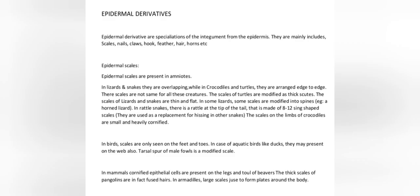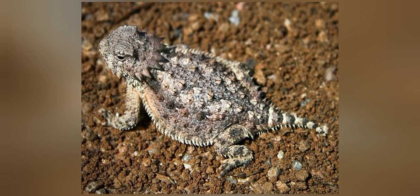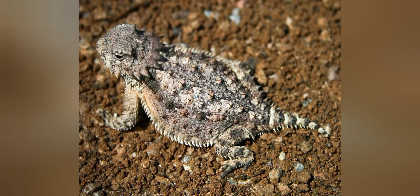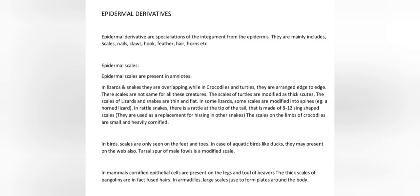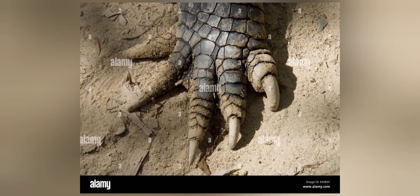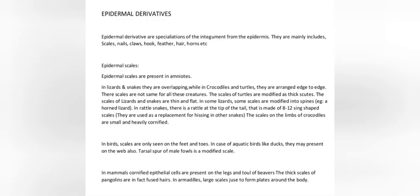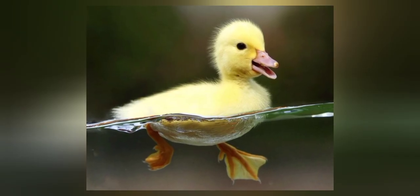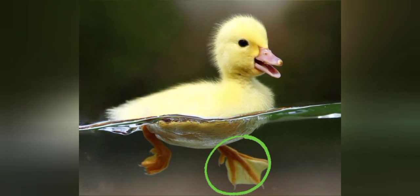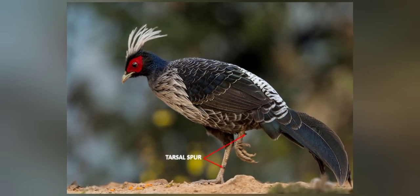Their scales are not the same for all these creatures. The scales of turtles are modified as thick skirts, while the scales of lizards and snakes are thin and flat. In some lizards, scales are modified into spines, e.g. a horned lizard. In rattlesnakes, there is a rattle at the tip of the tail made of 8-12 ring-shaped scales, used as a replacement for hissing. The scales on the limbs of crocodiles are small and heavily cornified. In birds, scales are only seen on the feet and toes, and in aquatic birds like ducks, they may be present on the web also. The tarsal spur of male fowls is a modified scale.